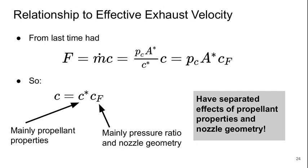So in developing this form for the expression for the thrust from a rocket nozzle, we've done something incredibly useful. We've separated the effects of the propellant properties and of the nozzle geometry. So instead of these things all being muddled up together, we actually have them nicely separated. And C star essentially deals with the propellant and CF mainly deals with pressure ratio and nozzle geometry.